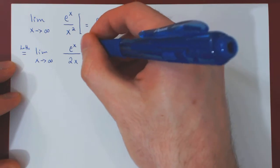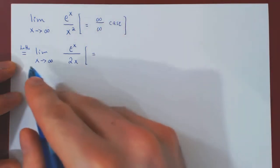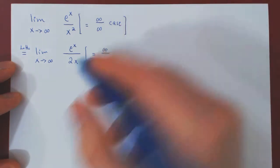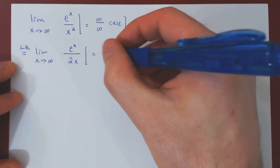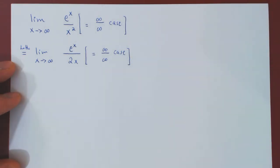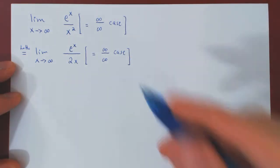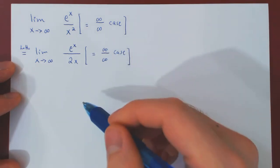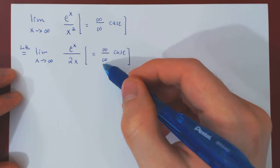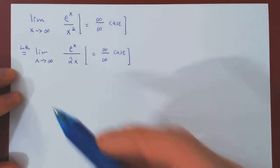Once again, we check our case. As x goes to infinity, e to the x goes to infinity, over 2x, which also goes to infinity. So once again, we have an indeterminate case. Something very big over something very big. But, as it is an infinity over infinity case, we can apply L'Hopital's rule one more time.